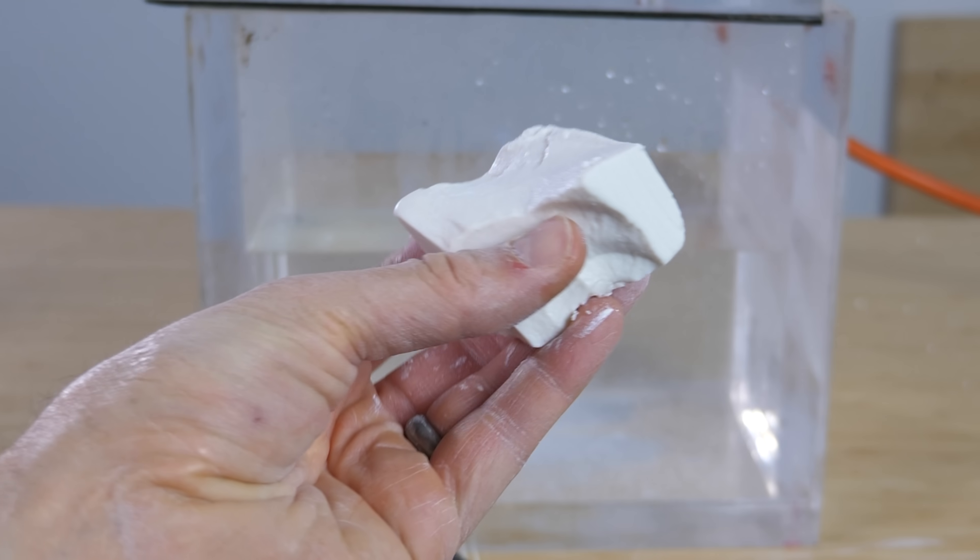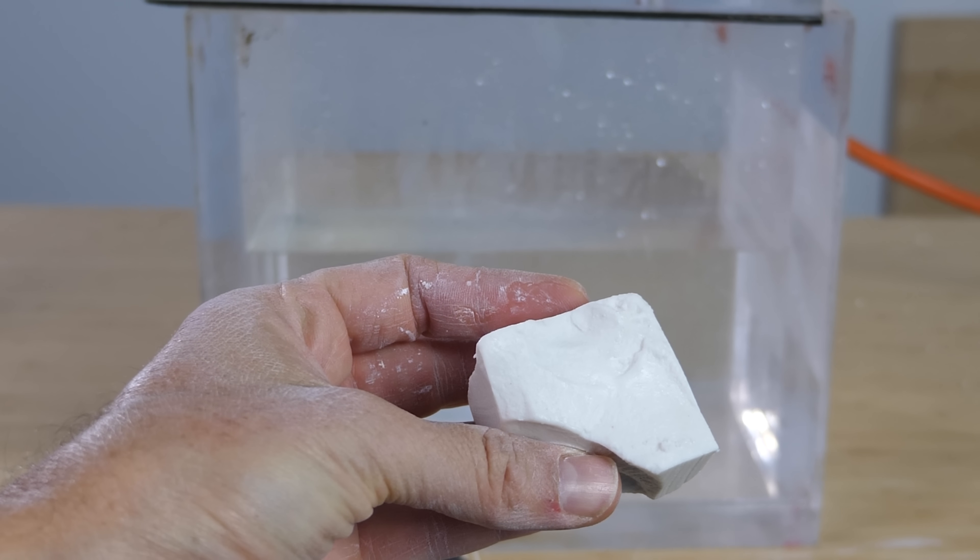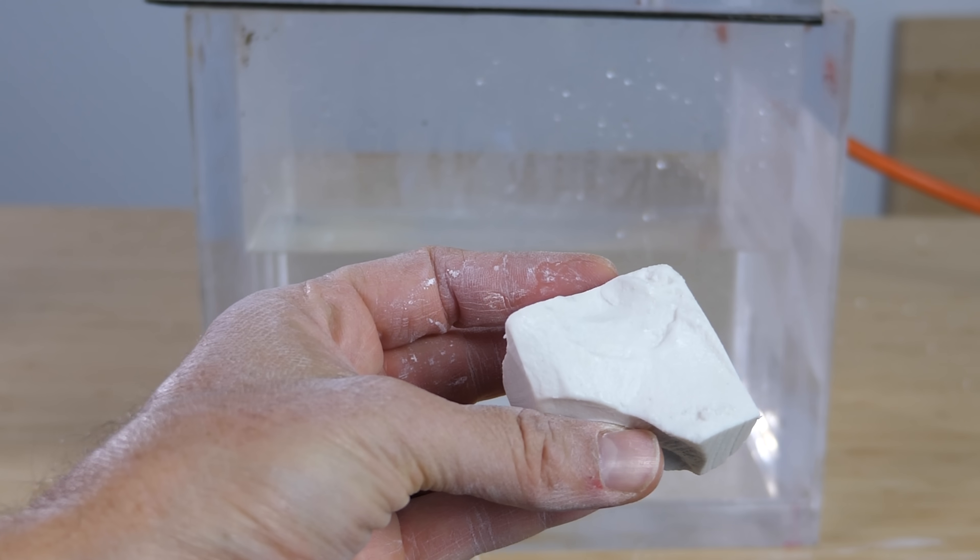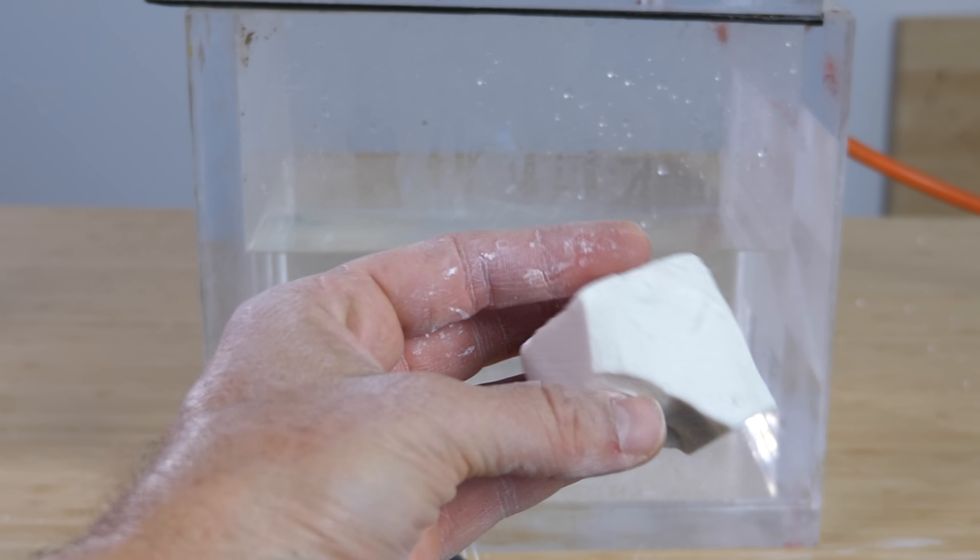This is similar to the way that you can make instant pickles by putting cucumbers in vinegar. And then you're sucking out the air so the air bubbles out of the cucumber. And then when you let the air back in, it instantly sucks in the vinegar into the cucumber.